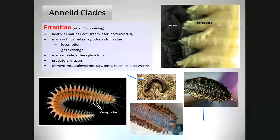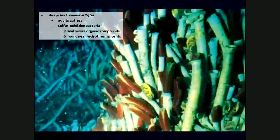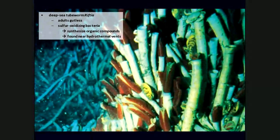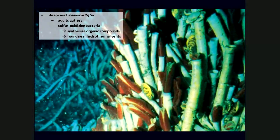Tube worms belong in this group. Tube worms are named because they live in tubes, about two thousand meters down in the ocean where there's no sunlight. For example, the deep-sea tube worm Riftia lives around hydrothermal vents. The adult tube worms have no gut — they're gutless. They contain sulfur-oxidizing bacteria that oxidize hydrogen sulfide coming out of the geothermal vent, using that in a process similar to photosynthesis. These are also segmented worms belonging to the Errantian group.